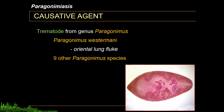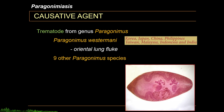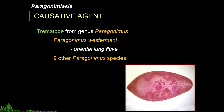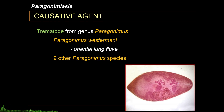Paragonimus westermani is seen in Korea, Japan, China, Philippines, Taiwan, Malaysia, Indonesia, and India, while the other more common Paragonimus species, Paragonimus heterotrimus, is usually seen in Southeast Asia and Southern China.